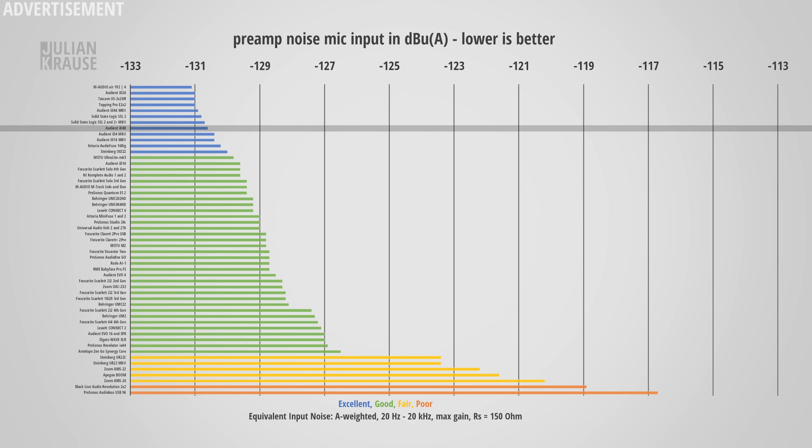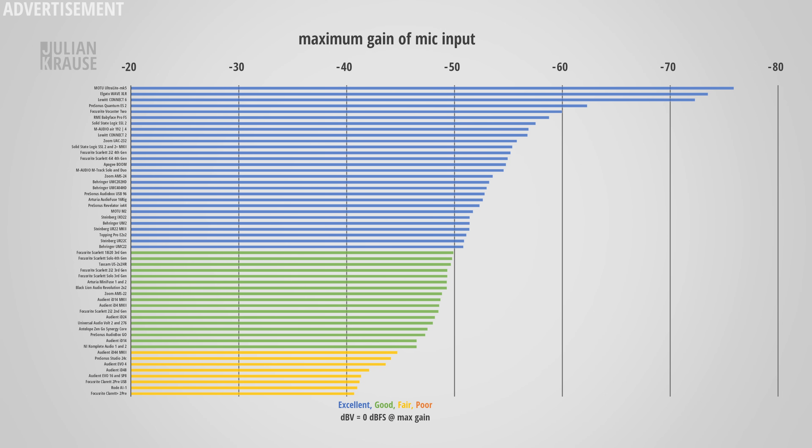Preamp noise is also important, especially when using a dynamic microphone with low output level like an SM7B — which I use pretty much every time I do a preamp test, not because it's a great microphone, but because it needs loads of gain and that brings out the noise of the preamp. This is a worst case scenario. The noise floor sounds pretty good, and measurements confirm it — the ID48 lands right next to its siblings in the excellent category. The maximum gain may seem low, but there's a boost feature in the software, so if you need more gain you can simply boost it. This also means there's absolutely no need for a Cloudlifter with this interface.